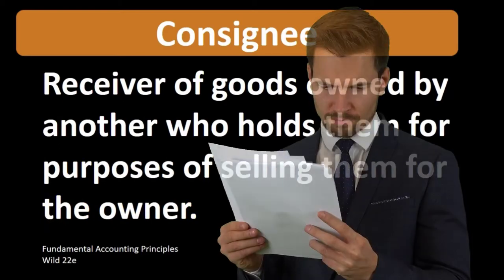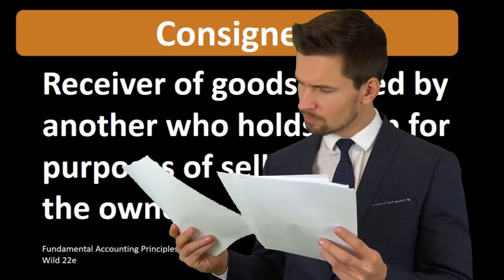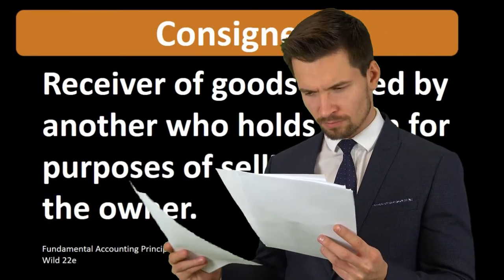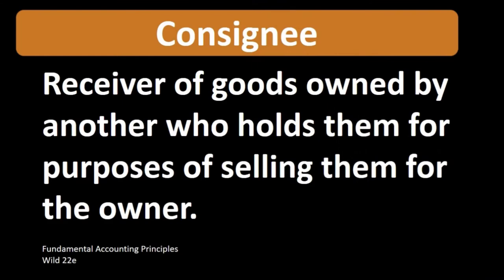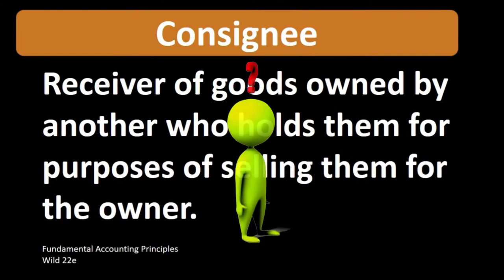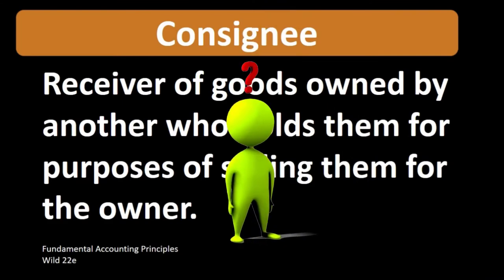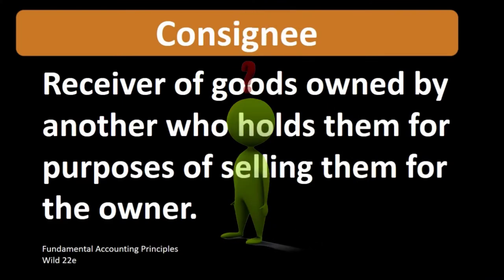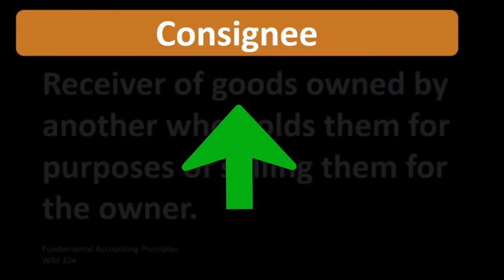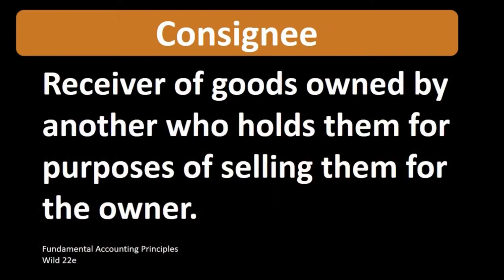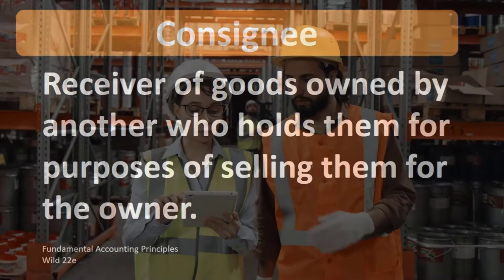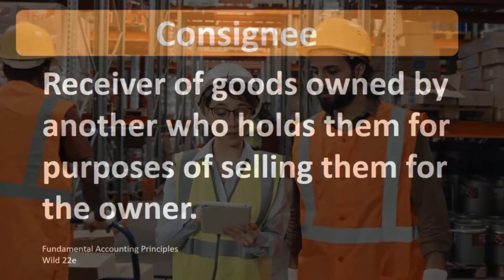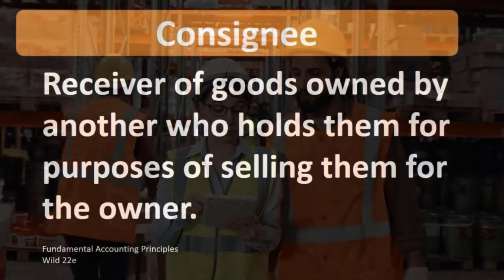A couple things that can be confusing about this term: one has to do with inventory — specifically who owns the inventory and who is holding the inventory. The other has to do with which side of the consignment transaction we are on. Are we the person giving the inventory or the person receiving the inventory?